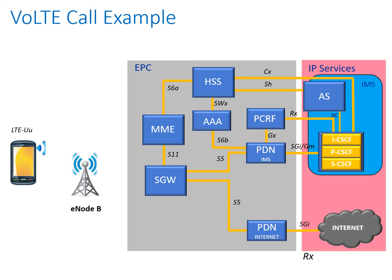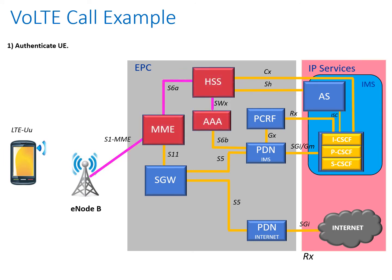Initially, we're going to have to use the MME — the Mobility Management Entity — to authenticate our device prior to entry into the EPC. The MME communicates with the Home Subscriber Server (HSS), which in turn communicates with the AAA server for authentication, authorization, and accounting purposes.